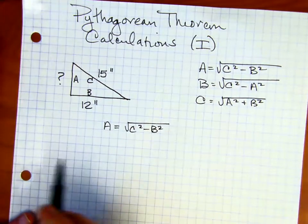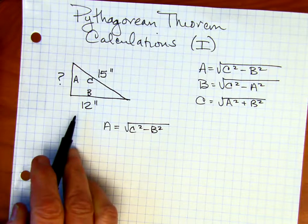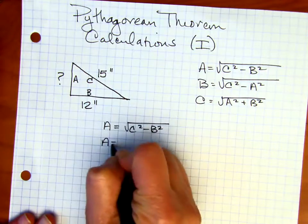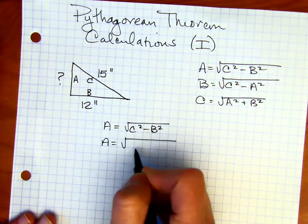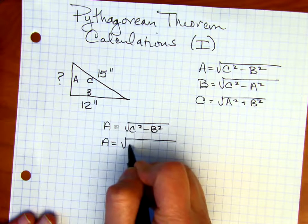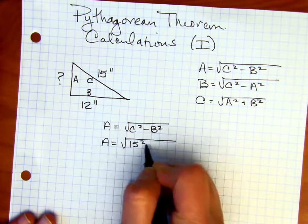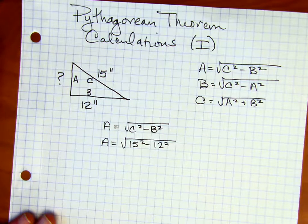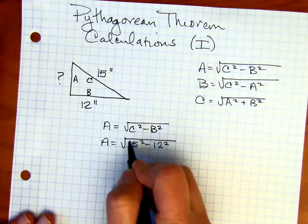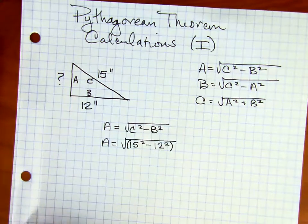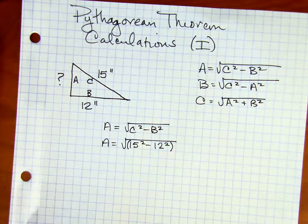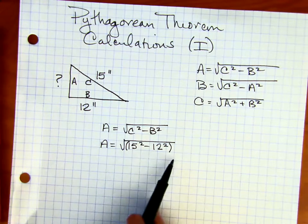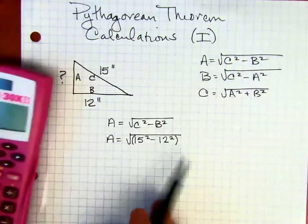Now, the second step is to plug in the numbers that are given into the formula. So we're solving for A. And I'm going to put, under the square root sign, 15 squared minus 12 squared. You can put parentheses around those if you wish. The calculator is going to put an open parentheses. And so if you want to put a closing parentheses, you can do that as well.